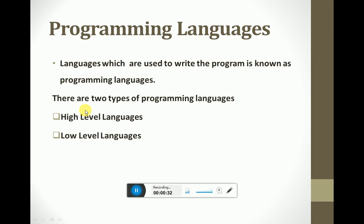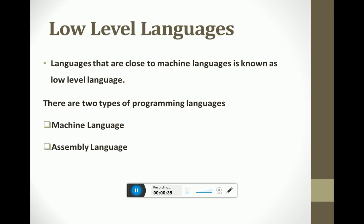There are two types of programming languages: high-level languages and low-level languages. Low-level languages are those that are close to the machine language. There are two types of low-level languages: machine language and assembly language.